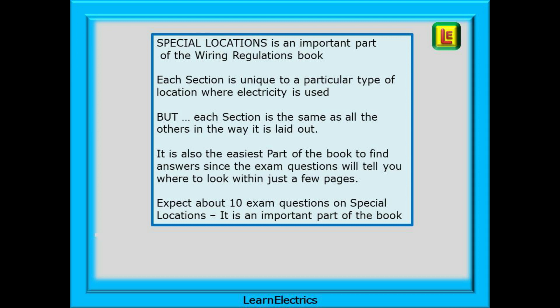Special locations is an important part of the Wiring Regulations book. Each section is unique to a particular type of location where electricity is used and is in addition to any other regulations in the book that apply. But each section is very much the same as all the others in the way that it is laid out. It is also the easiest part of the book to find answers to since the exam questions will always tell you where to look within just a few pages. You should expect about 10 exam questions on special locations. It is an important part of the book, not just for the exam, but also when working on site.